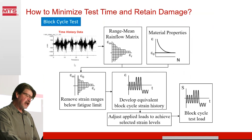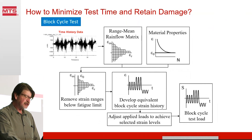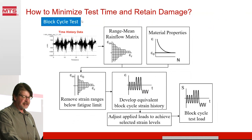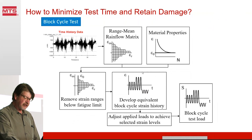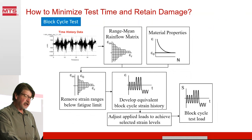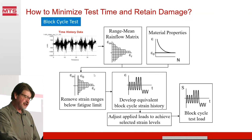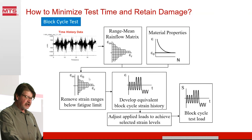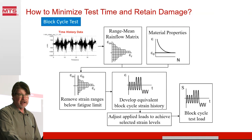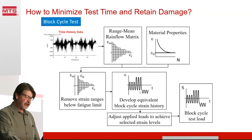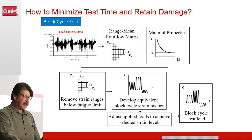Maybe we want to minimize test time and retain damage but be more representative of the variable time history. We've got various mean loads and various amplitudes, so we're going to do a block cycle test. That takes the data and breaks it into different mean loads and different dynamic loads to better simulate the real changing environment of the specimen. We use our range-mean rainflow matrix to extract not only the range but also the mean forces as separate bins. We remove strain ranges below the fatigue limit to edit the data down, then develop an equivalent block cycle strain history with various mean and cyclic loads to achieve the same equivalent damage as the original time history data.